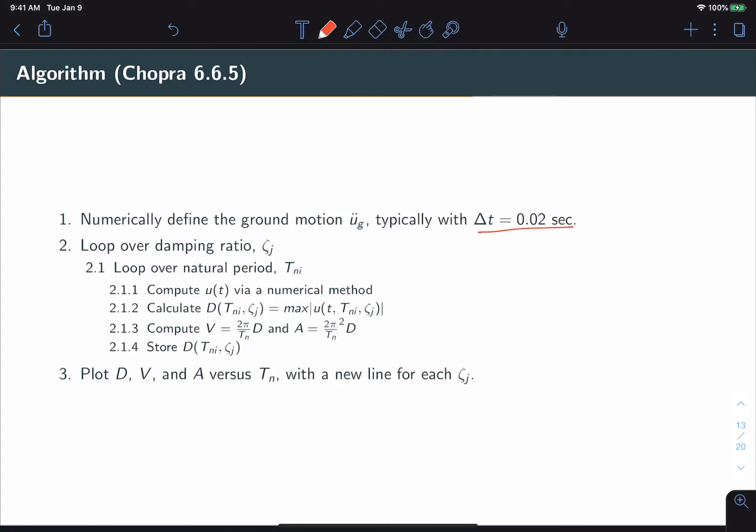Then you'll loop over a set of damping ratios of your choice. For each damping ratio, you will loop over a set of natural periods of your choice. Typically, you want a resolution of at least 0.1 seconds, if not a little smaller.